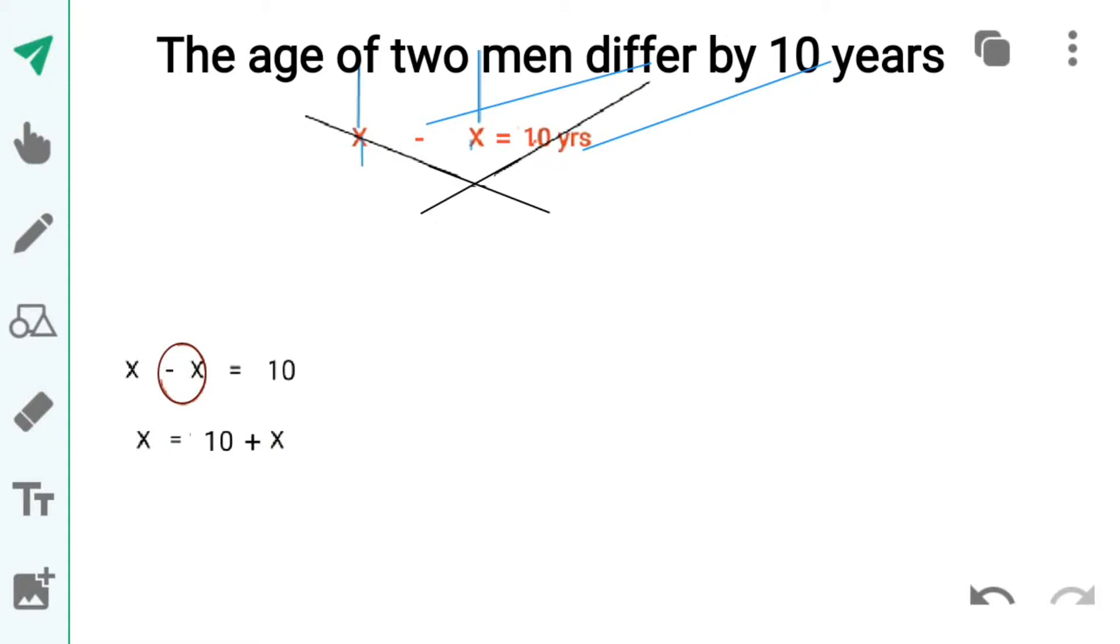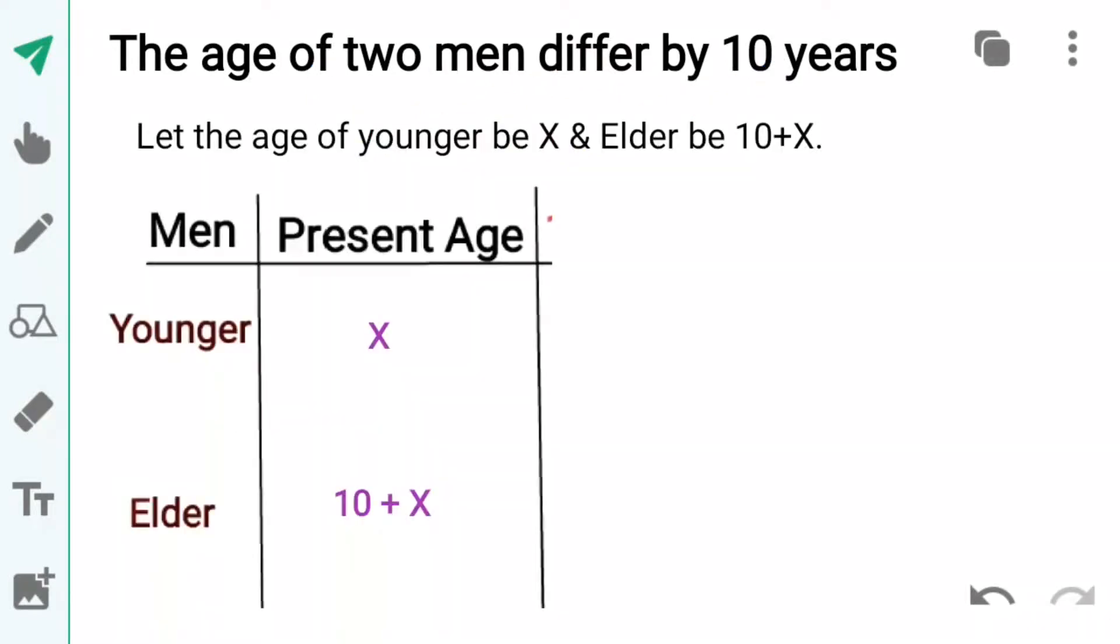Toh expression kaisay banayengge. Younger aur elder me se younger ko x leengge. Aur duusere x ko equals to ke duuseri taraf le jaa kar 10 se plus karengge. Toh 10 plus x elder ki age ki expression hogi. Aur isay aise likhengge: Let the age of younger be x and elder be 10 plus x.